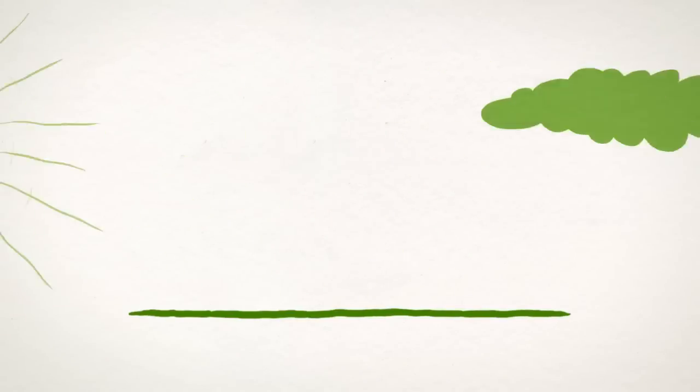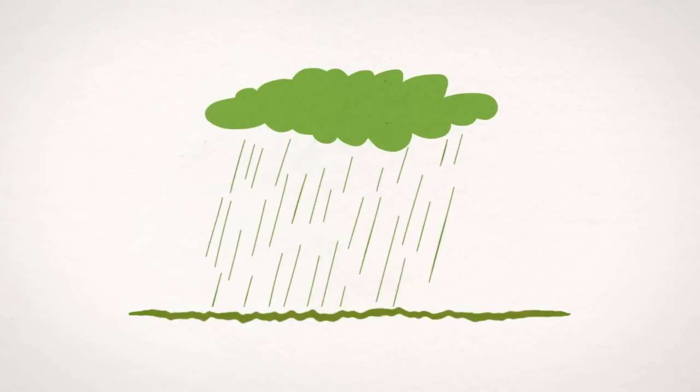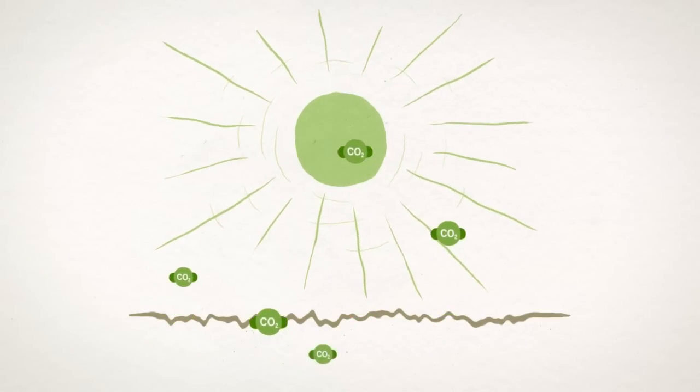Not to forget climate change, which alters the drought and rain patterns. But not only does climate change contribute to soil degradation, soil degradation also worsens climate change because degraded soil can store less carbon.